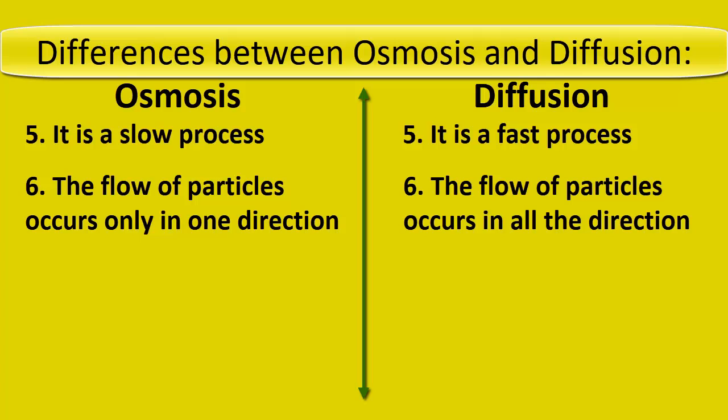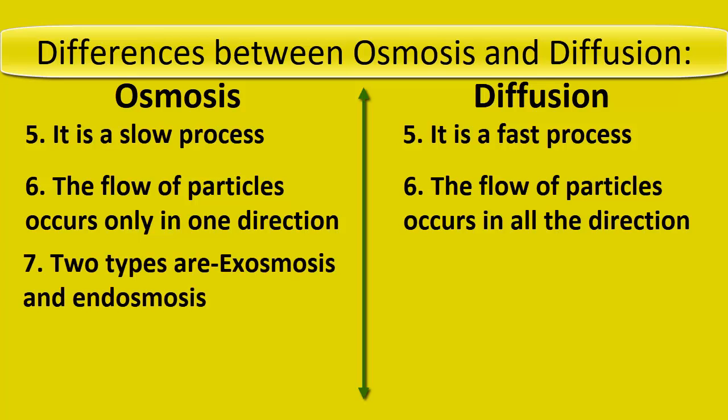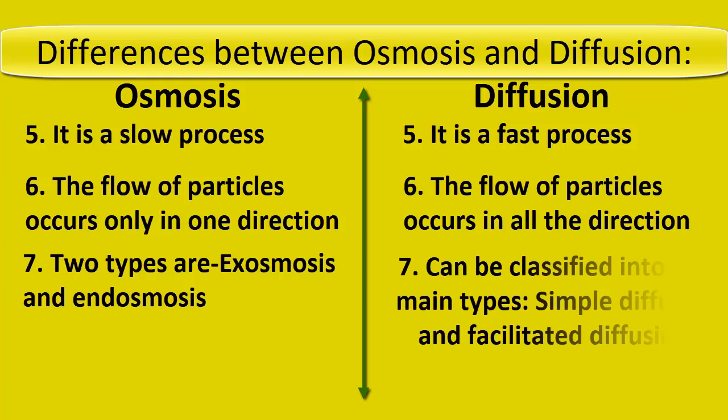In osmosis, the flow of particles occurs only in one direction; in diffusion, the flow of particles occurs in all directions. Osmosis has two types: exosmosis and endosmosis. Diffusion can be classified into two main types: simple diffusion and facilitated diffusion.